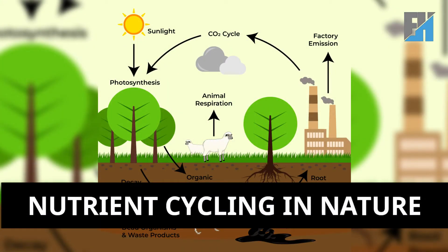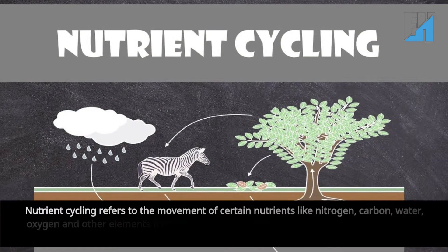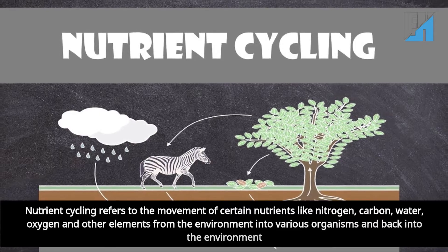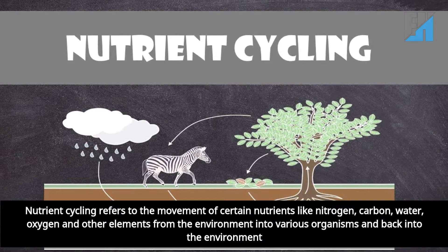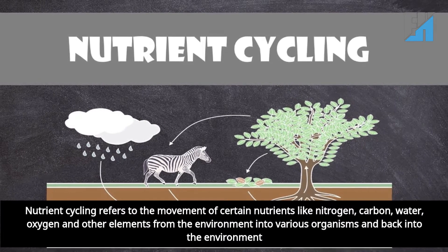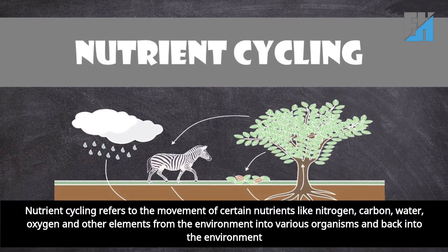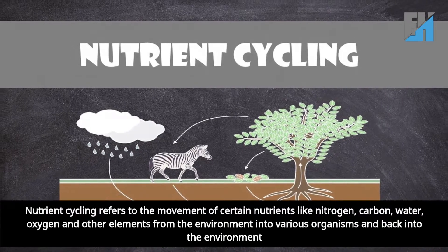In today's class, we will be learning the topic: nutrient cycling in nature. Nutrient cycling refers to the movement of certain nutrients like nitrogen, carbon, water, oxygen and other elements from the environment into various organisms and back into the environment.